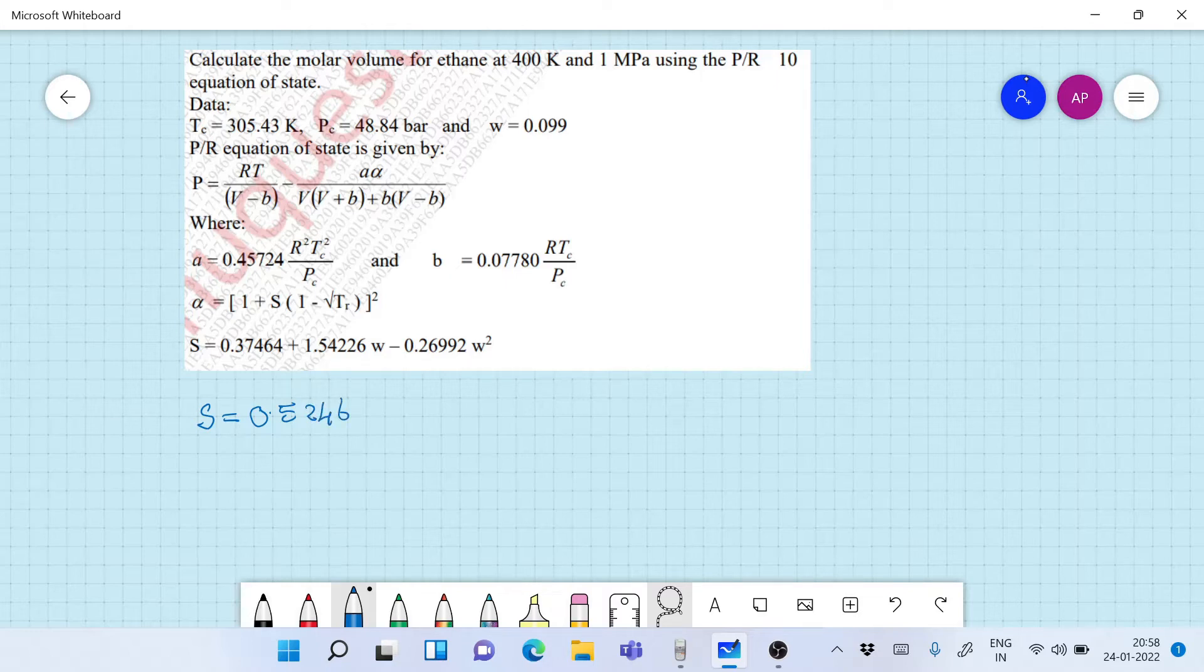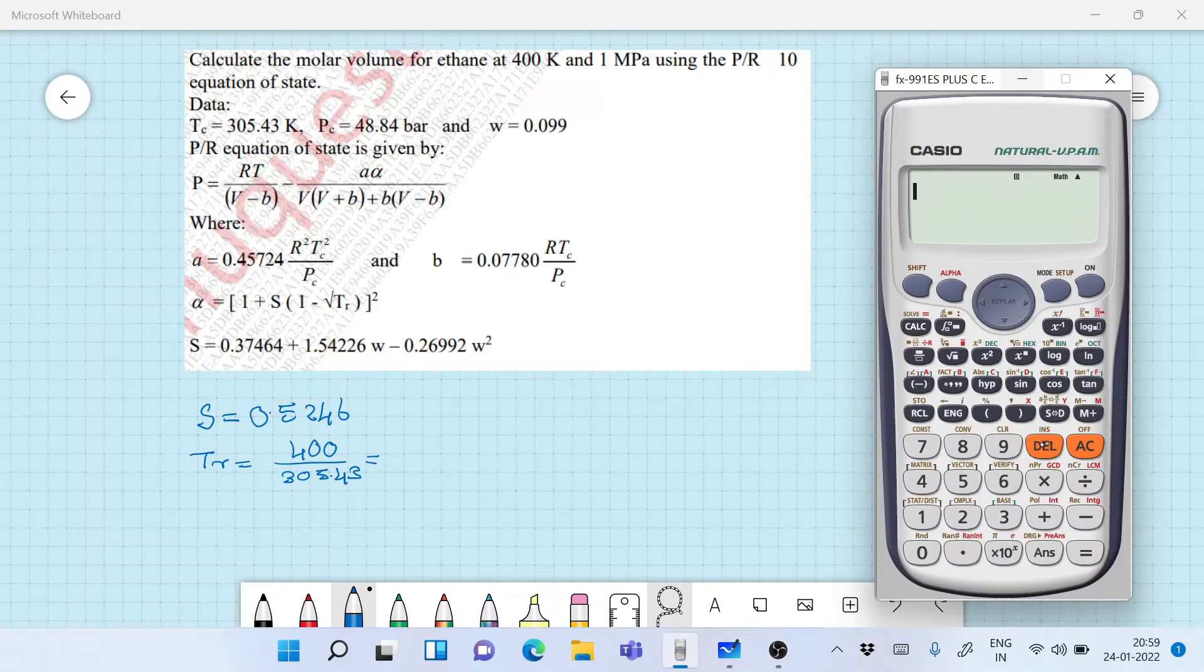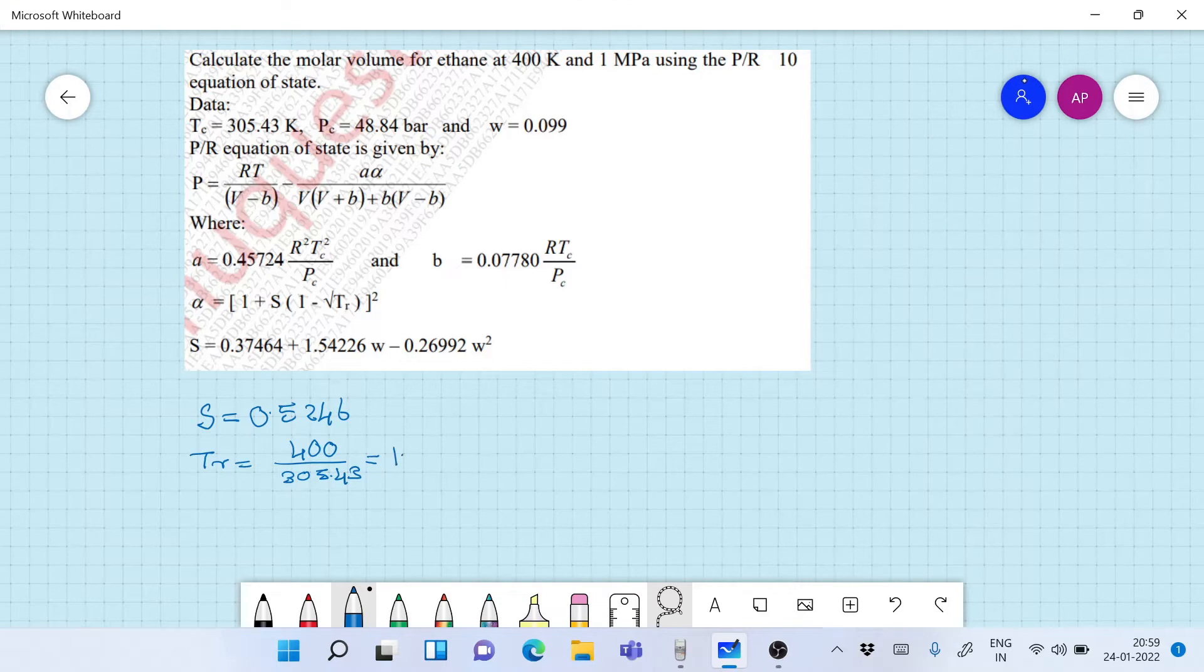Now after we calculate the value of s, we calculate the value of the reduced temperature. The reduced temperature is 400 divided by the critical temperature that is 305.43. So that's 400 divided by 305.43, that's 1.3096. So we can take it as 1.31.